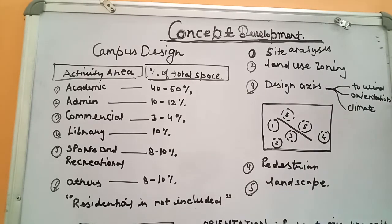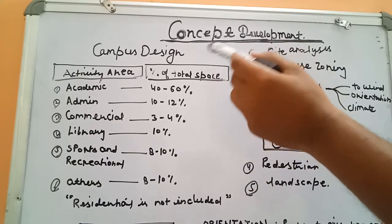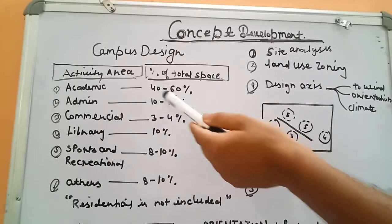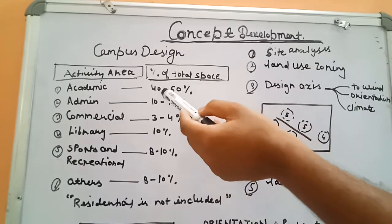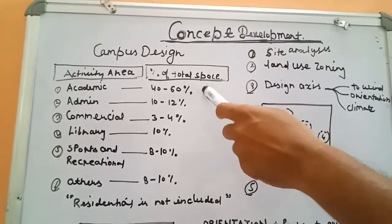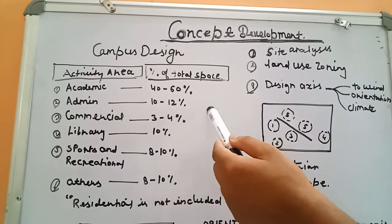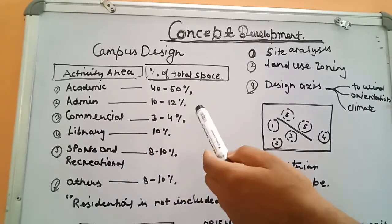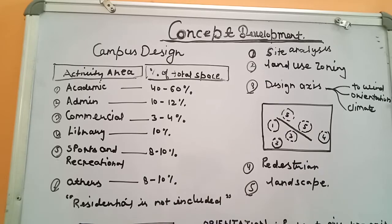First of all, we develop our zoning, and for zoning we need to know about the areas and what percentage of area we should give to different activities. For a campus design, we reserve 40 to 60% of the total site or built area for academic use — research also falls under academic. Administration area is 10 to 12%, commercial is 3 to 4%, library is 10%, sports and recreational is 8 to 10%, and others 8 to 10%.